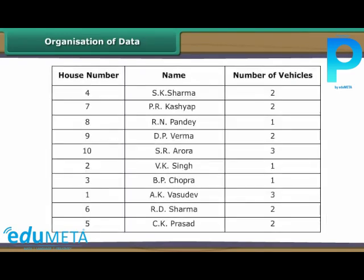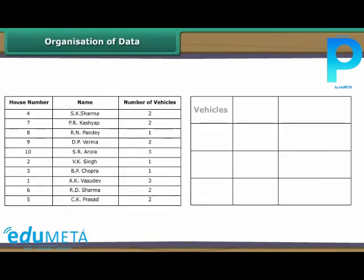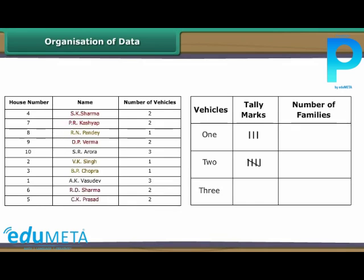Let us now organize the RWA data. Make three columns: vehicles, tally marks and number of families. Specify one, two and three under vehicles one by one. Under tally marks, denote families with a specific number of vehicles by tally marks against the appropriate option. Now count the tally marks against every option of vehicles and record it under number of families.